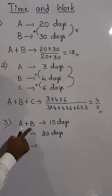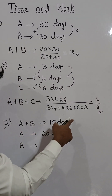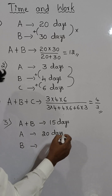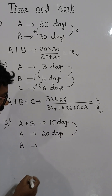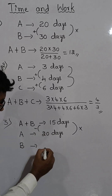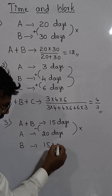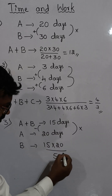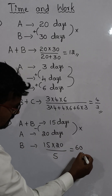A and B together can complete a work in 15 days, and A alone can complete the work in 20 days. B alone can complete the work using the product divided by their difference. That is 15 into 20, where the difference is 5, which equals 60 days.